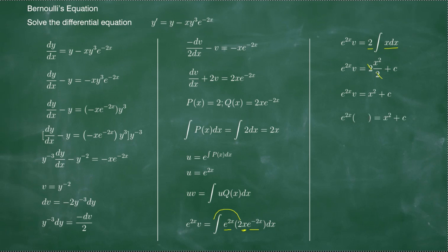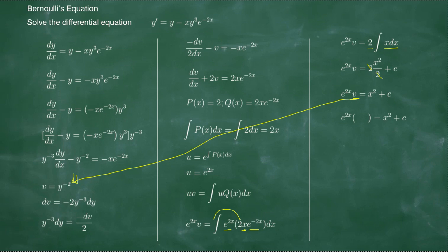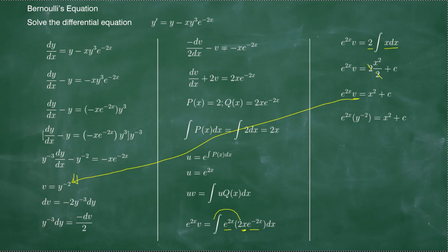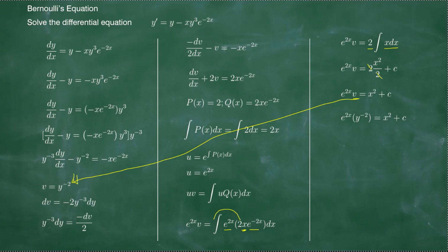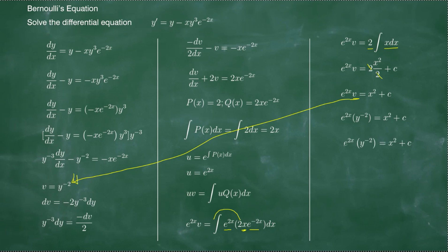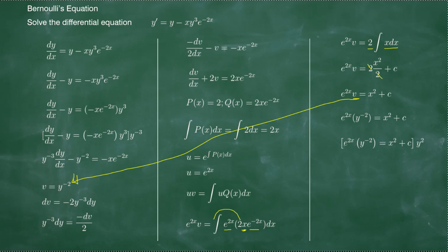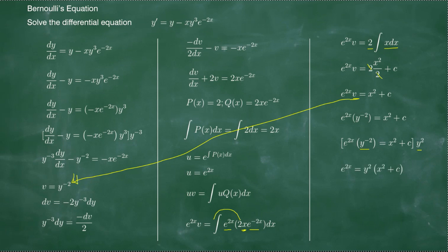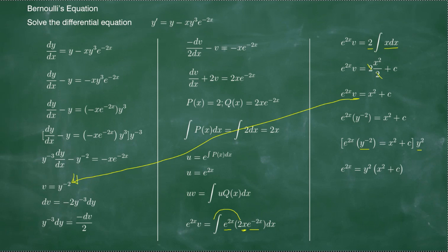We now have e to the 2x times v equals x squared plus C. Since v equals y to the negative 2, we substitute back: e to the 2x times y to the negative 2 equals x squared plus C. To eliminate the negative exponent, we multiply the whole equation by y squared, giving us the final answer: e to the 2x equals y squared times the quantity x squared plus C.